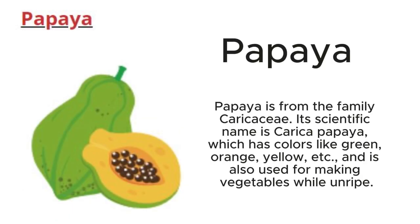Papaya: Papaya is from the family Caricaceae. Its scientific name is Carica papaya, which has colors like green, orange, yellow, etc., and is also used for making vegetables while unripe.